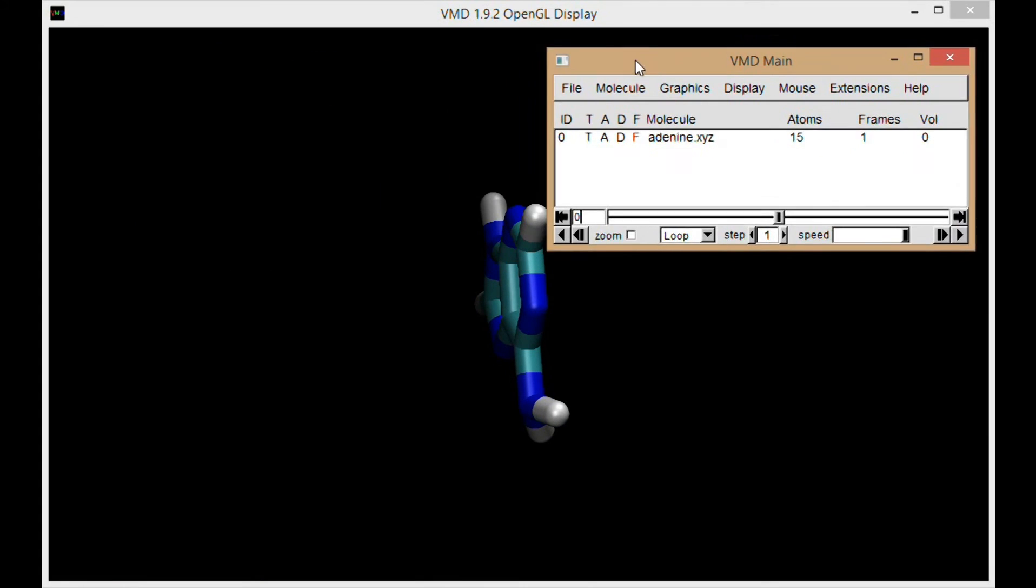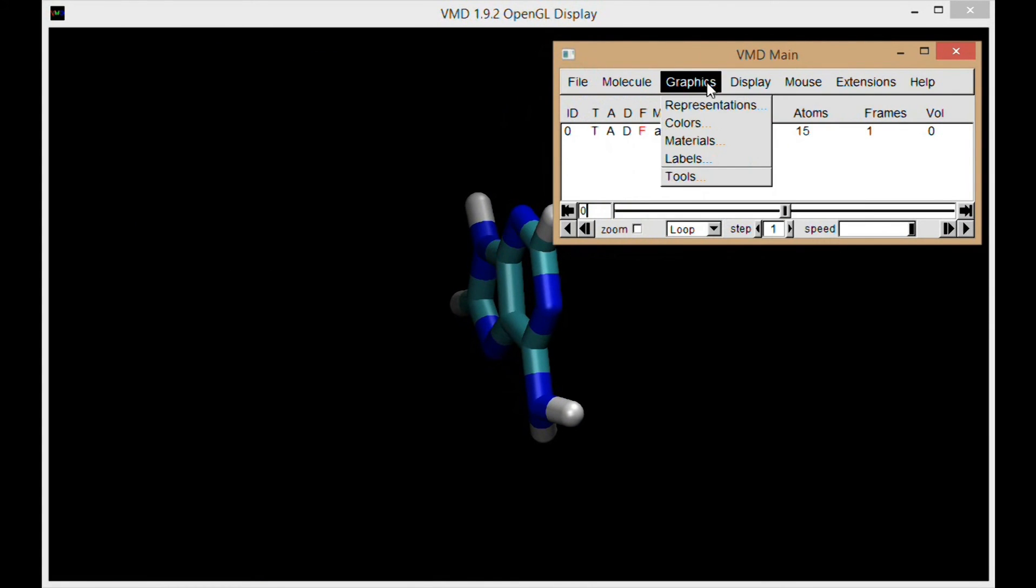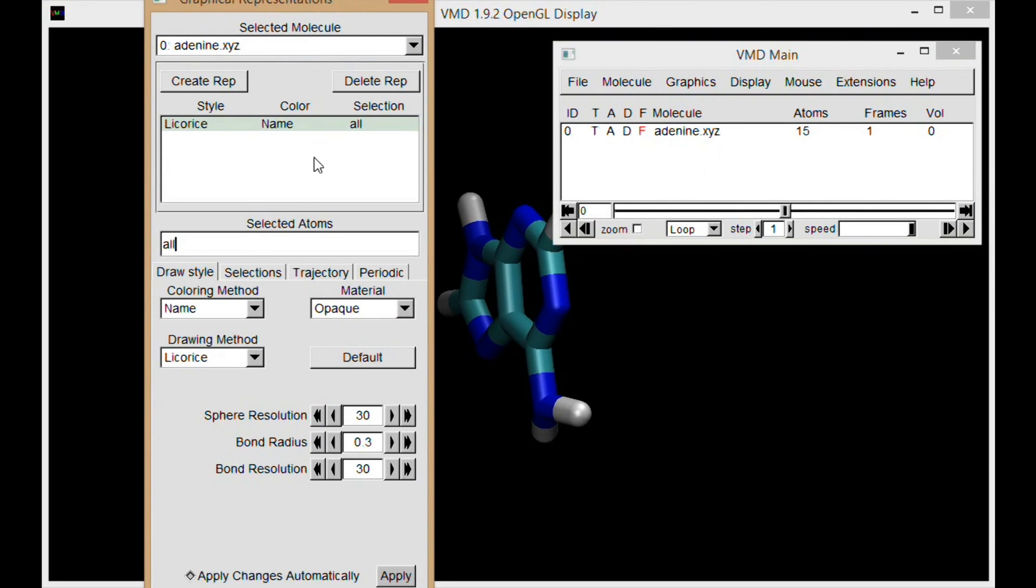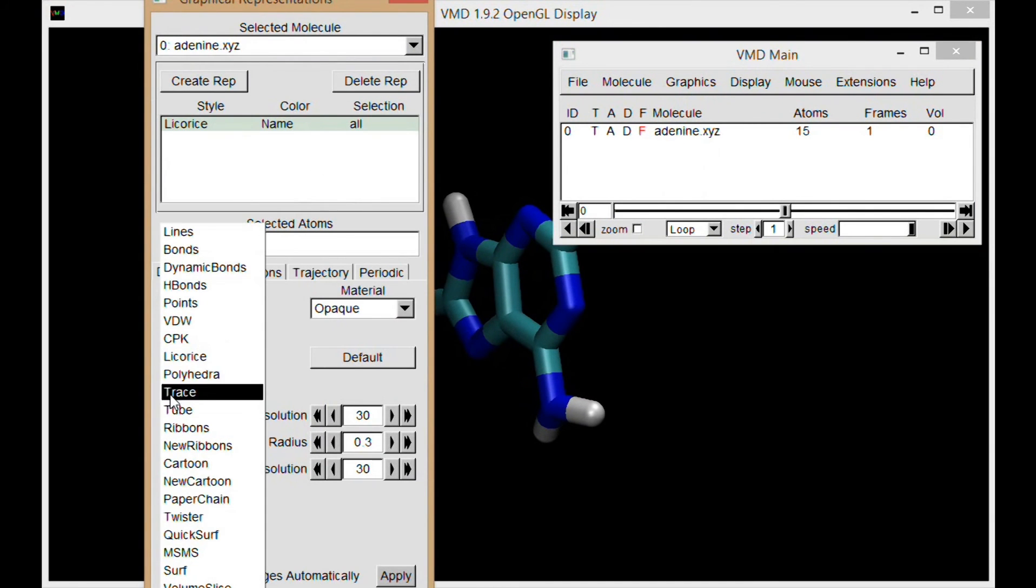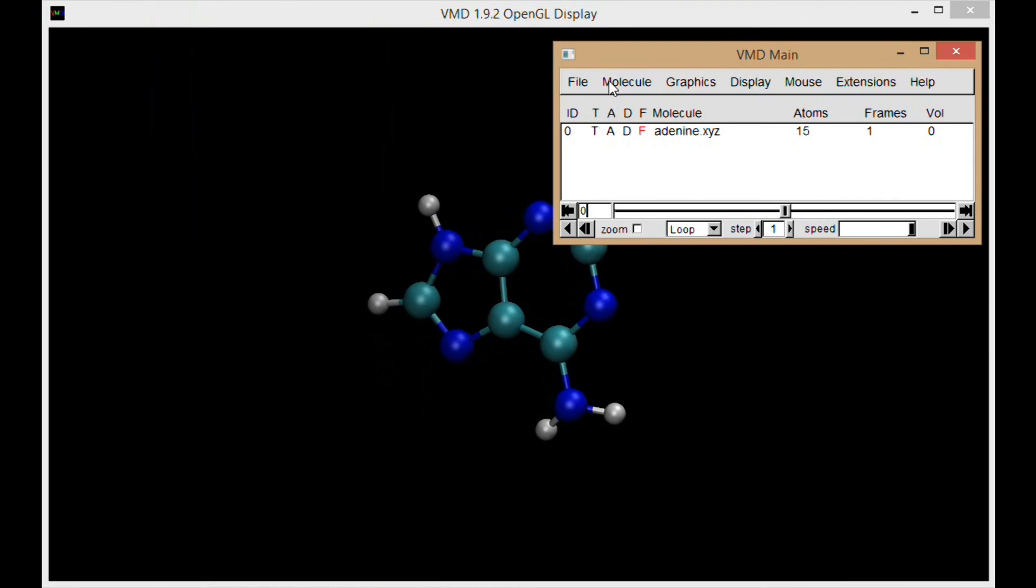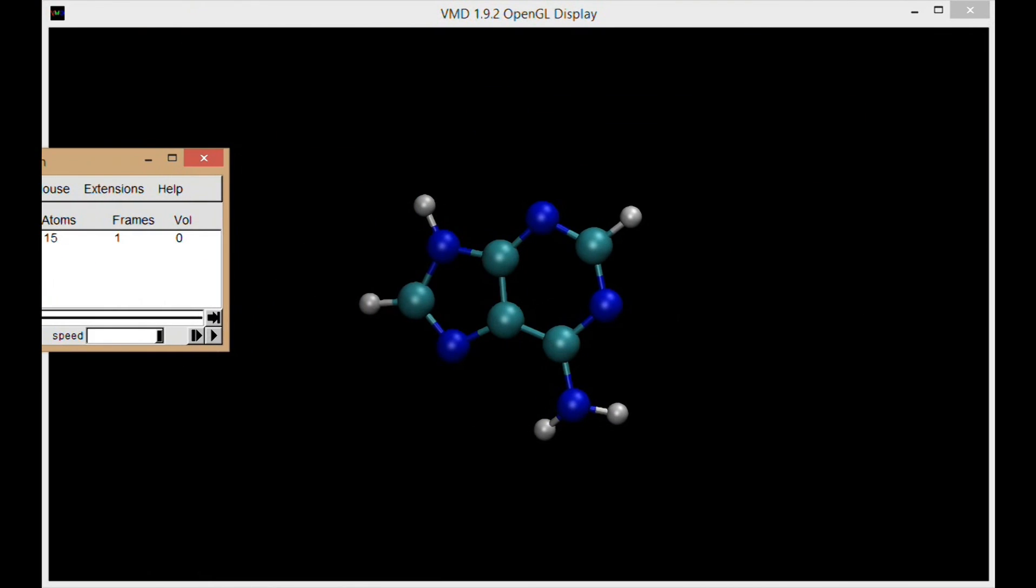Then two others that I also find quite useful that I use a lot. If I go to Representations, also the CPK, which is kind of a ball-and-stick model. We can see there the ball-and-stick model as it rotates around.